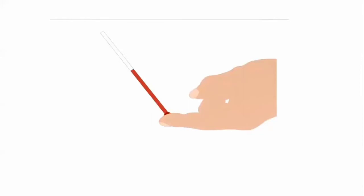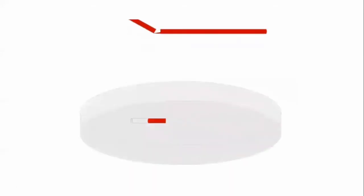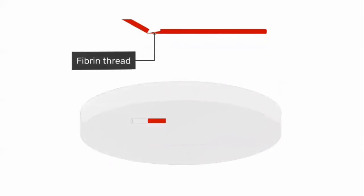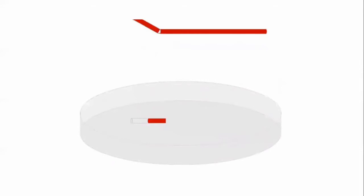Blood will automatically enter and fill the capillary tube. Then, at intervals of 30 to 60 seconds, the capillary tube is broken to check for clot or fibrin formation. This is repeated step by step until clot formation appears. As soon as fibrin thread or clot formation is seen in the broken capillary tube, the stopwatch is stopped and the time is noted. That time indicates the clotting time for that person.